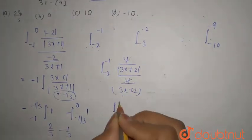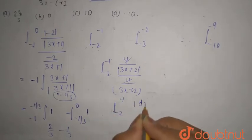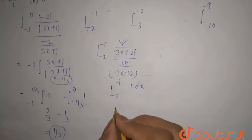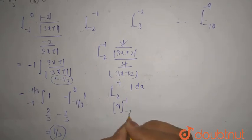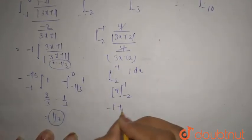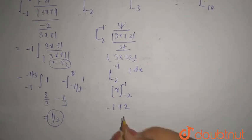So at the interval minus 2 to minus 1, integration 1 dx. So here you have x with the limit 1, minus 1, minus 2. This will be minus 1 plus 2, so minus 1 plus 2 will be nothing but 1 only.